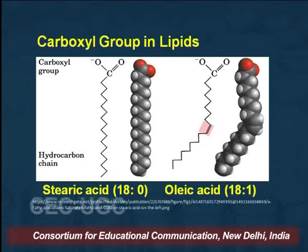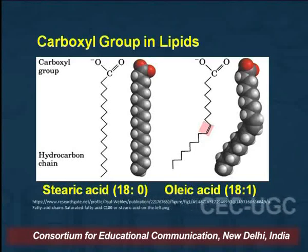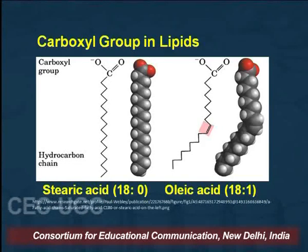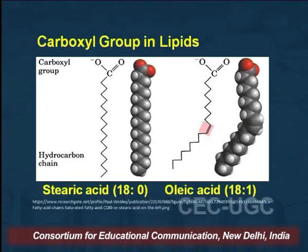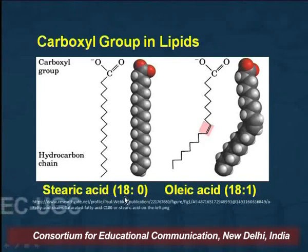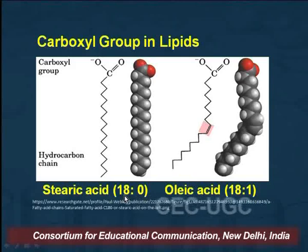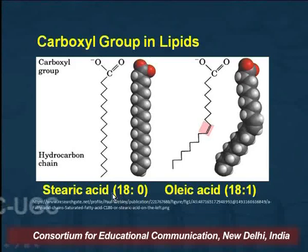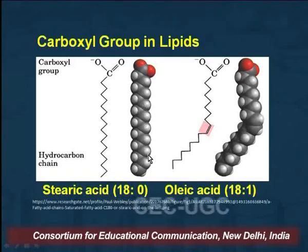We can have two types of fatty acids. One is stearic acid, which is saturated, written as 18:0 — meaning it has 18 carbon atoms and 0 degrees of unsaturation. The other is oleic acid, which is unsaturated.